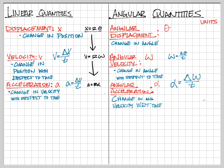Another thing we need to look at with this is units. Angular displacement is in units of radians. Angular velocity is going to be in radians per second. Angular acceleration is going to be in radians per second squared. We'll go through some examples in class that make a little more sense with all of this.